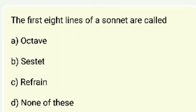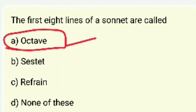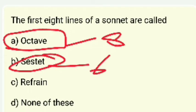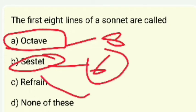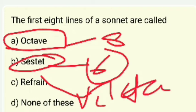The first eight lines of a sonnet are called — octave, sestet, referent, or none of these? The right answer is octave. Octave means eight lines; sestet means six lines. The volta is the change in mood used in sonnets.